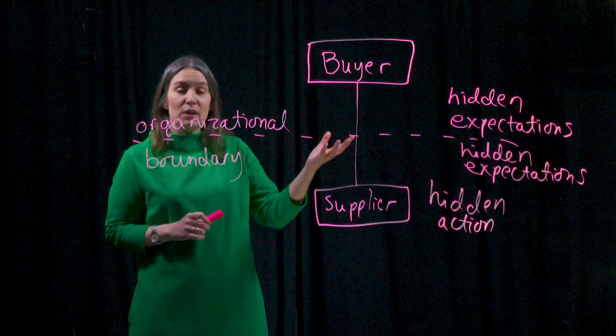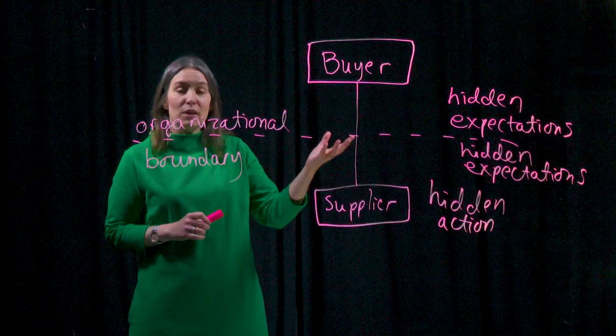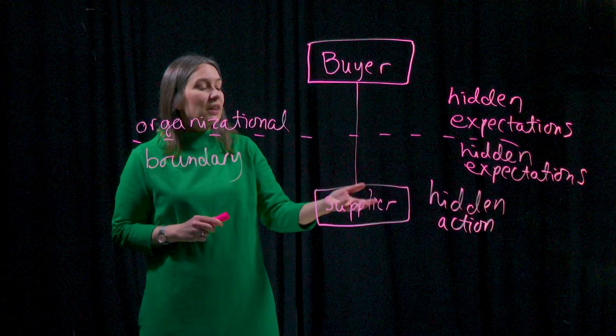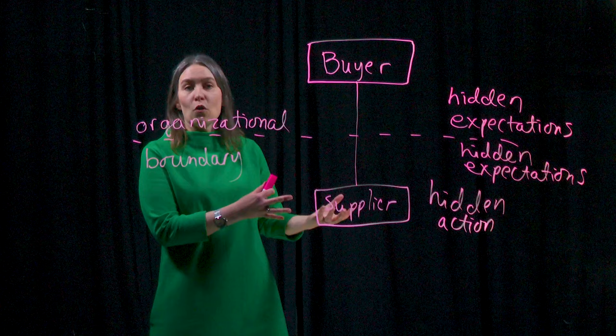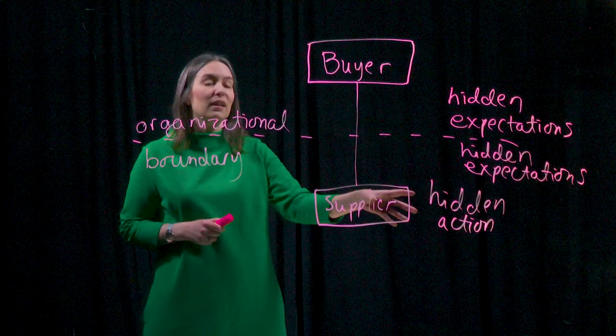Importantly, we hold the assumption of bounded rationality from agency theory and assume this is a relational problem. Both parties are in a sense at fault — the supply failure is derived from the relationship between the buyer and the supplier, rather than hidden action of the supplier alone, as standard agency theory assumes.